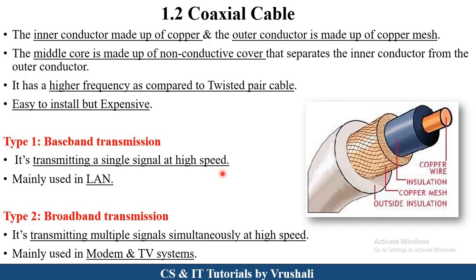The second type is broadband transmission. As the name suggests, broadband means multiple signals are simultaneously sent from one device to another device. That's why broadband transmission is used in modern television systems, providing information at very high speed. Coaxial cable has a higher frequency compared to twisted pair cable. It is easy to install but expensive compared to twisted pair cable. It can send a single signal or multiple signals simultaneously, according to the requirement.